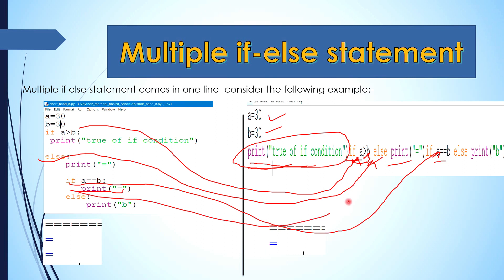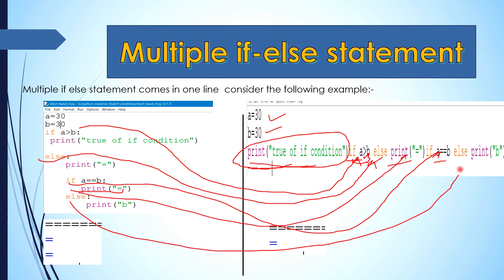So what does this mean? In the else block we have created, if a equals b then print equal, otherwise print b. We have multiple lines of code converted into one line. We call this a shorthand multiple if-else statement because we have used one if-else with a nested else-if block all in one line.